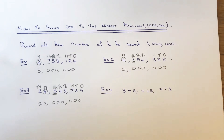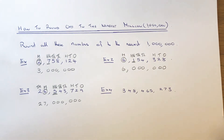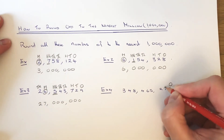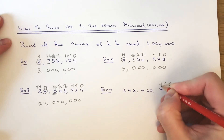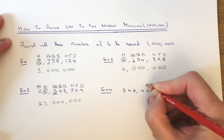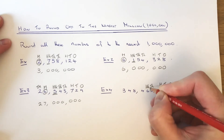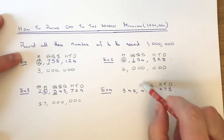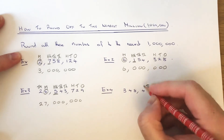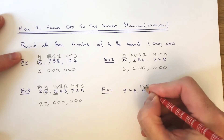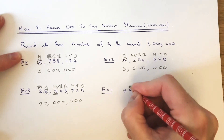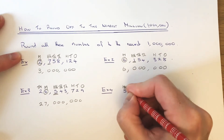Let's move on to example 4 — we've got a big number on this one: 348,465,273. Again, we just need to identify the millions column. Starting on the right-hand side: ones, tens, hundreds, thousands, tens of thousands, hundreds of thousands, then millions, then tens of millions, and hundreds of millions.